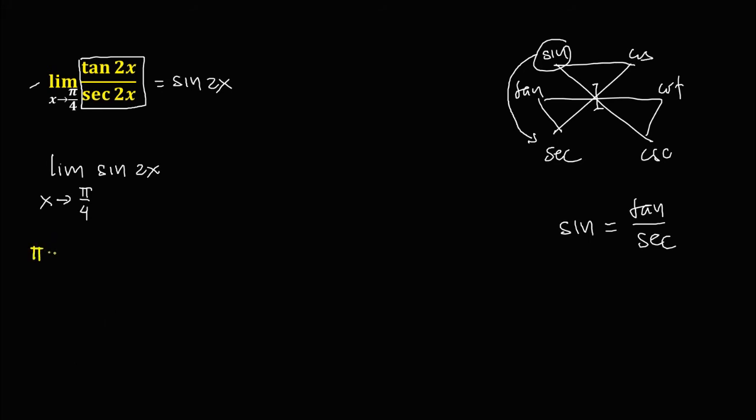since pi is equal to 180 degrees, therefore, this pi over 4, that's equal to 180 over 4. And 180 degrees divided by 4, that's 45 degrees. So x is equal to 45 degrees.